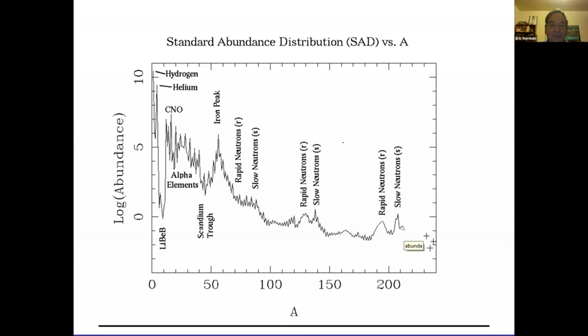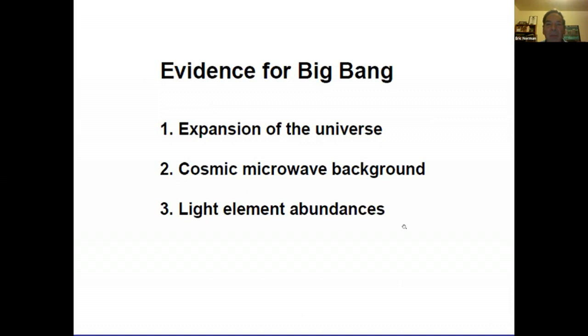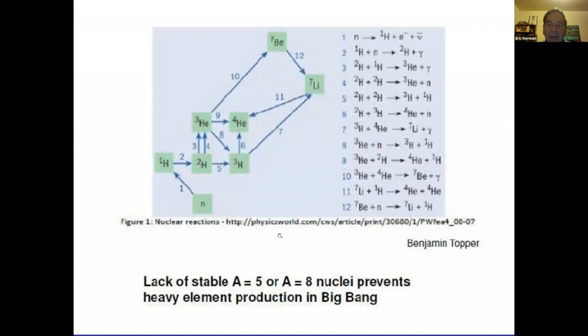We believe our universe began about 14 billion years ago in the Big Bang. There's very good observational evidence: the universe is expanding, it's pervaded by a background of cosmic microwaves, and the light element abundances of hydrogen, helium, lithium, beryllium, and boron tell us a lot about the nature of the Big Bang. Roughly a second or two after the initial event, you would be left with a soup of neutrons, protons, electrons, photons, and neutrinos - expanding and cooling.